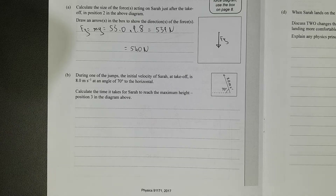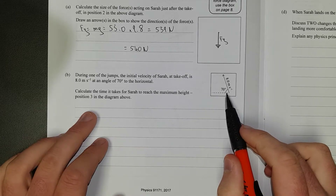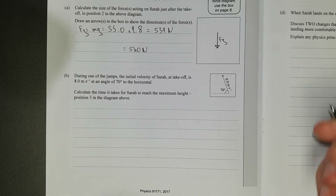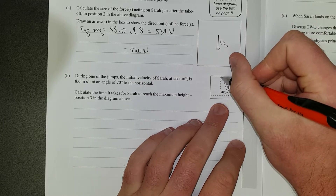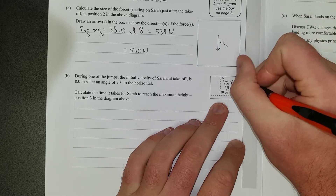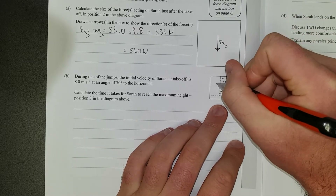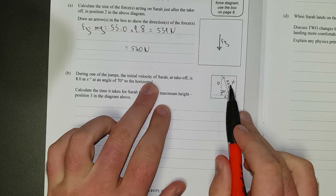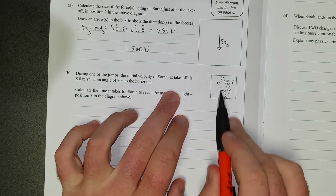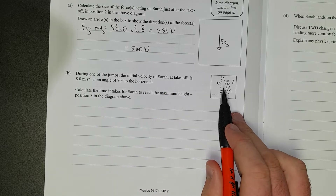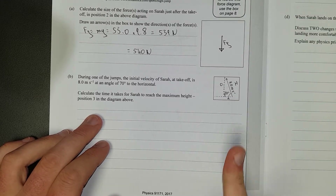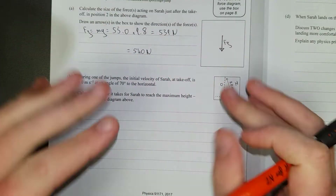During one of the jumps, the initial velocity at takeoff is 8 meters per second at an angle of 70 degrees to the horizontal. Calculate the time it takes for Sarah to reach the maximum height. This is a bit of a double whammy. First, let's finish off this triangle — here's the right angle. The hypotenuse is the adjacent, and the opposite is opposite the angle. We're trying to find the vertical velocity, because that's the velocity in the y direction, which is the direction gravity acts.